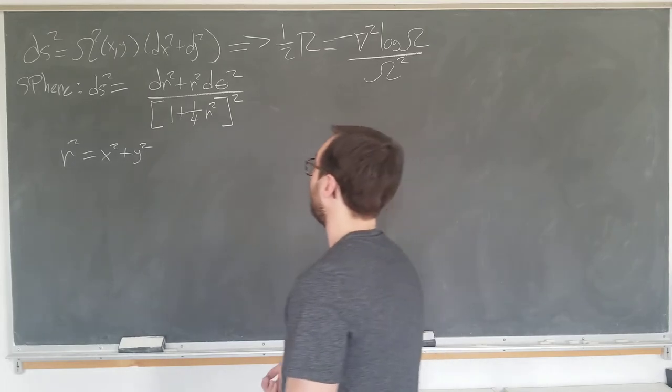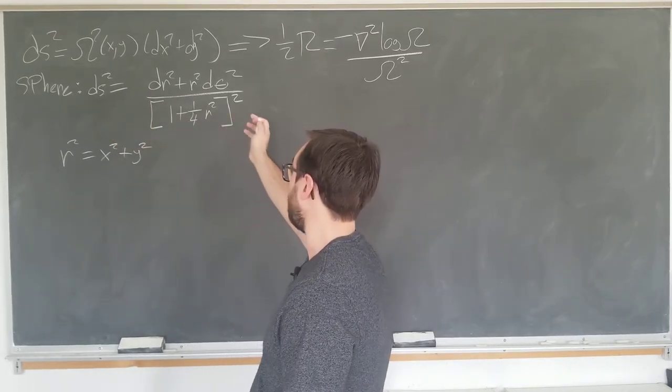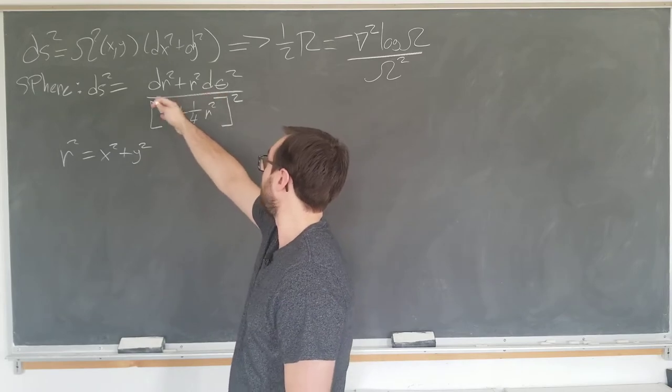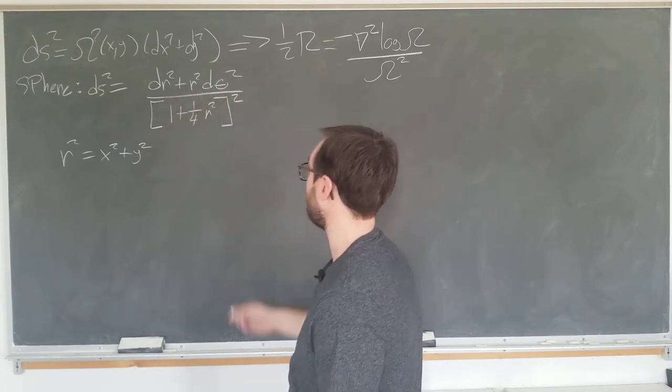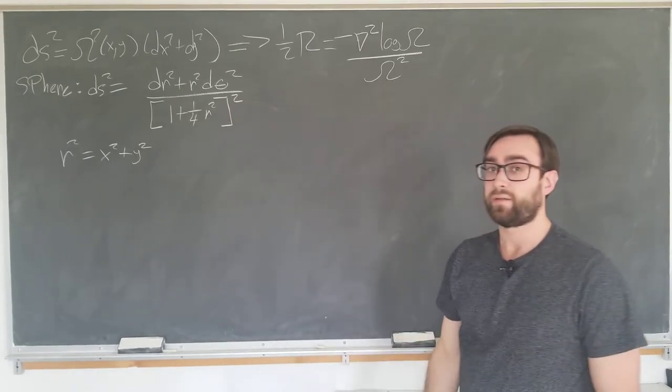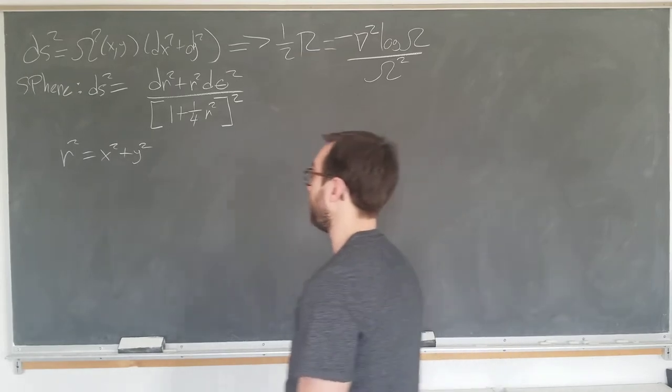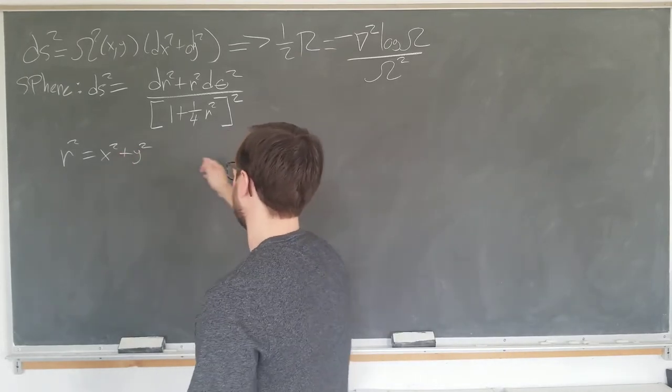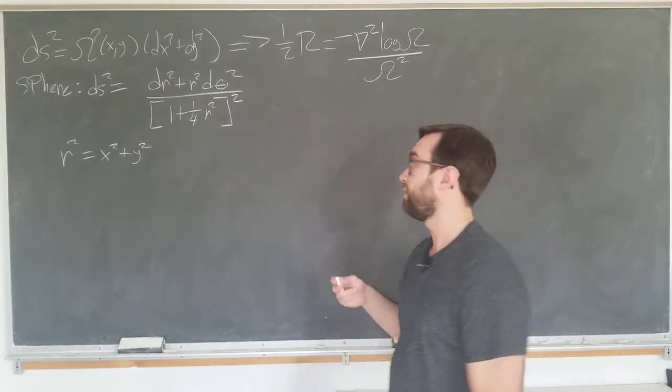It can also be shown that the sphere can be written in the following form: dr squared plus r squared d omega squared over one plus a quarter of the r squared squared, by using a simple coordinate transformation, where r is the usual r squared equals x squared plus y squared. Not going to show this either. Let's just proceed with the calculation.